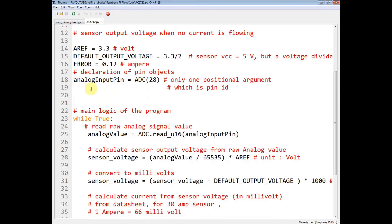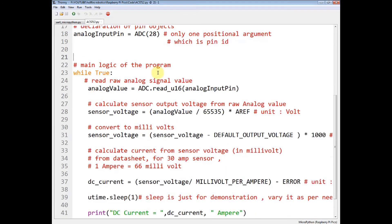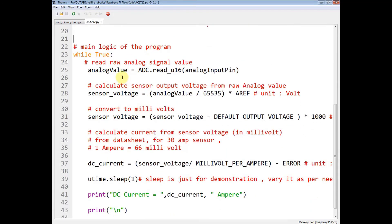Now you have to define the analog input pin at GPIO 28. Now this is the main logic of the program. First you read the analog value by using this function read_u16. So it will be reading the analog values on this analog input pin.